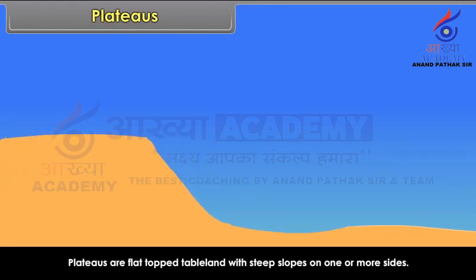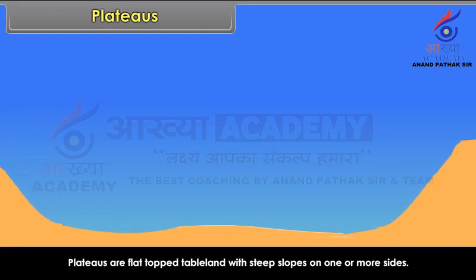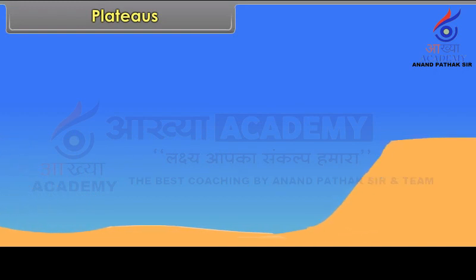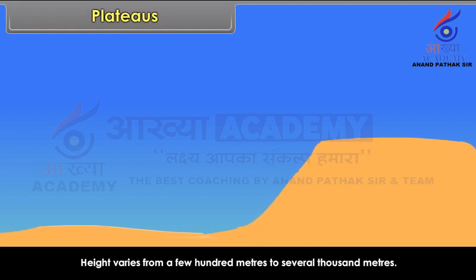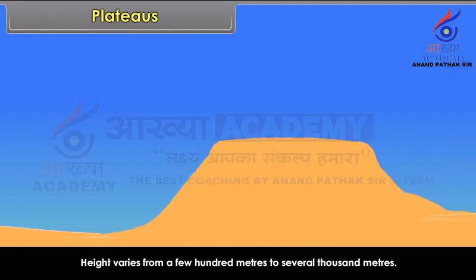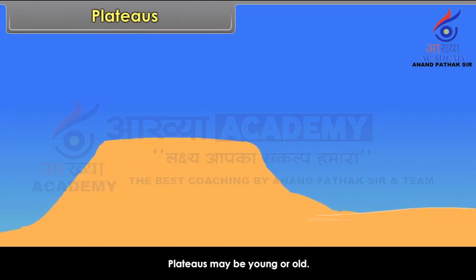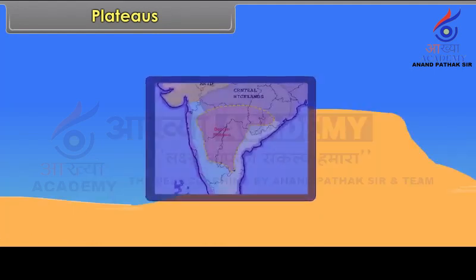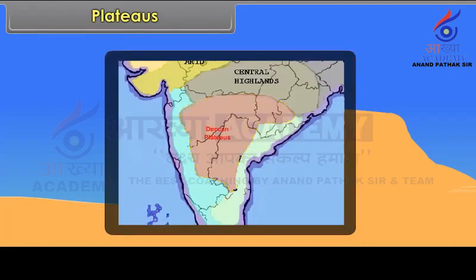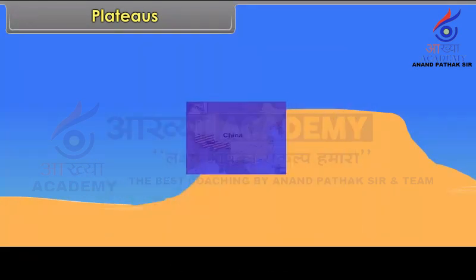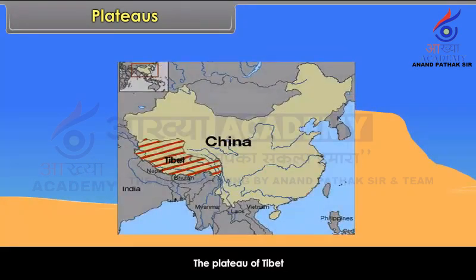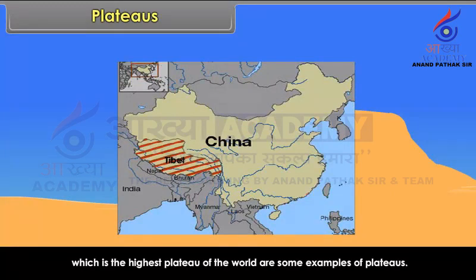Plateaus are flat-topped table land with steep slopes on one or more sides. Height varies from a few hundred meters to several thousand meters. Plateaus may be young or old. Examples include the Deccan Plateau of India, the Western Plateau of Australia, and the Plateau of Tibet, which is the highest plateau of the world.